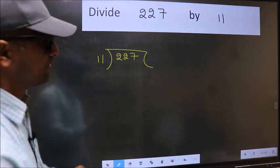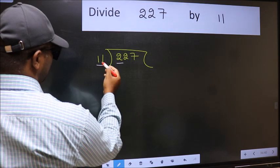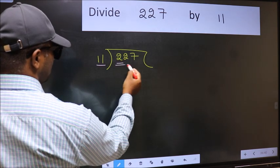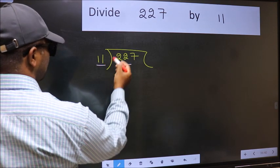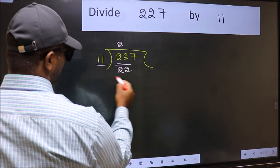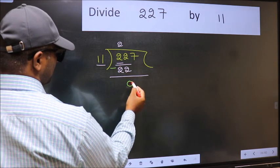Here we have 2, and here 11. 2 is smaller than 11, so we should take 2 numbers: 22. When do we get 22 in 11 table? 11 times 2 is 22. Now you should subtract. 22 minus 22 is 0.